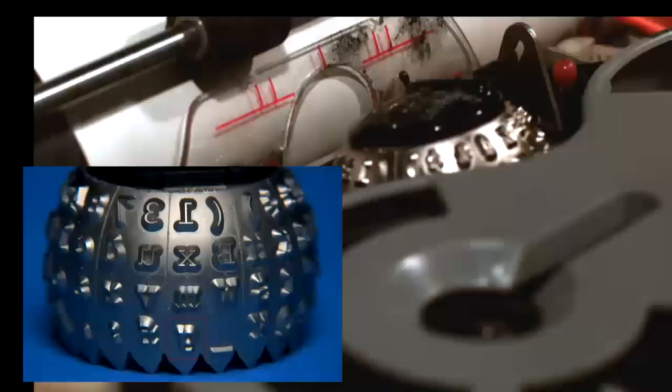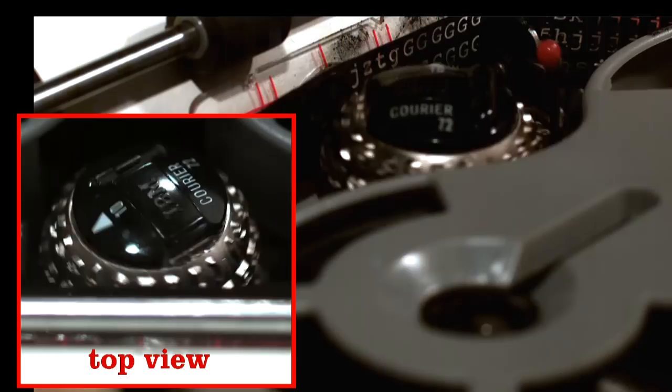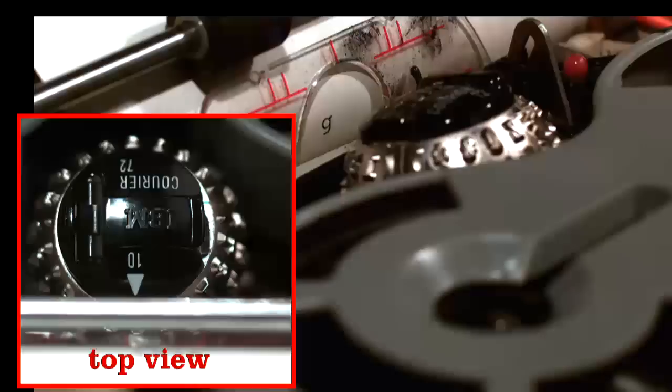The letter G, for example, is located on the lower left-hand side of the type element. To access that letter, the type element needs to rotate and then tilt and strike.